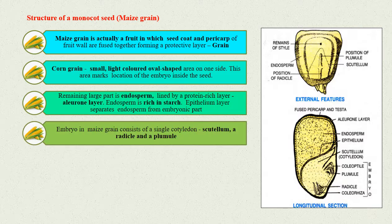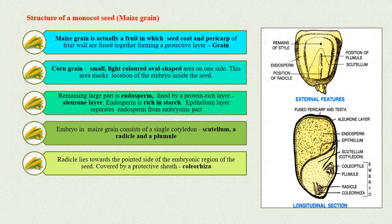The embryo in the maize grain consists of a single cotyledon called scutellum, a radicle, and a plumule. The radicle lies towards the pointed side of the embryonic region of the seed.